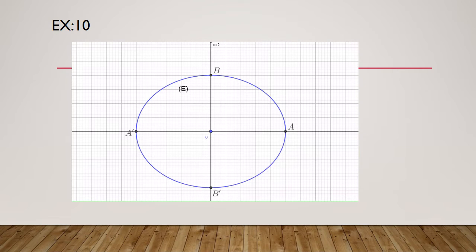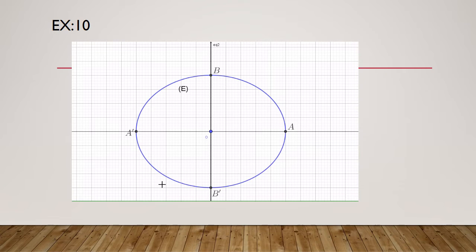Exercise 10: construct the foci and the directrices of an ellipse given its vertices. We have the ellipse and its vertices. We want to construct the foci and directrices, and we must use the results of Exercise 9 — that OQ is perpendicular to QK, and that Q belongs to the auxiliary circle of the ellipse.